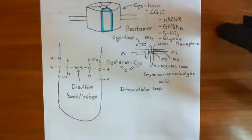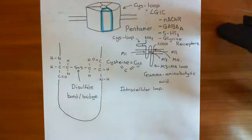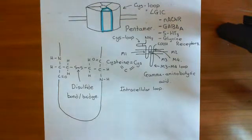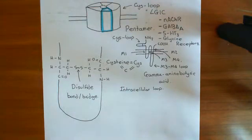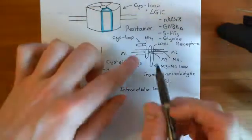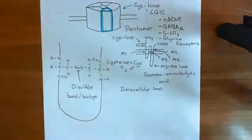Welcome to this next video in which we are discussing the opening mechanism of the cis-loop ligand-gated ion channels. We've discussed the four main types: the nicotinic acetylcholine receptors, the GABA-A receptors, the 5-HT3 receptors, and the glycine receptors. Although they are different proteins fundamentally, and respond to different ligands, and also conduct different ions in some cases, they all have this same basic structure that allows us to group them together as the cis-loop ligand-gated ion channels.